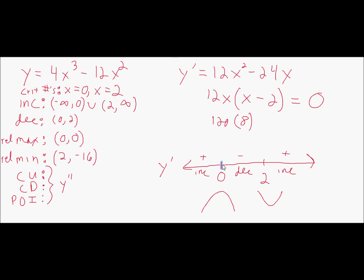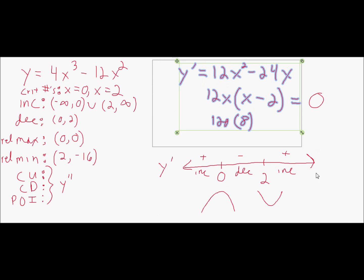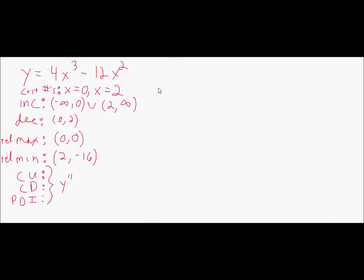We found all that just from the first derivative. Now I'm going to find the second derivative to talk about concavity — concave up, concave down, and points of inflection. The work is essentially the same: find where the second derivative is positive or negative, which gives concave up or concave down, just as the first derivative gave increasing or decreasing. The first derivative is 12x squared minus 24x.